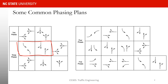You can also have something like this phase plan. You start with a left turn, then go through the through movement, and then finish with another left turn. So you start with the first left, then have through movement, and then finish with this left. This is called a lead-lag phase plan.